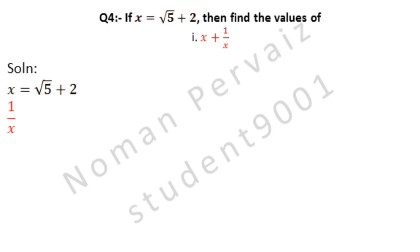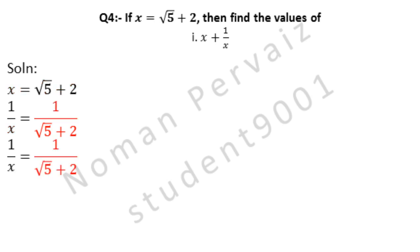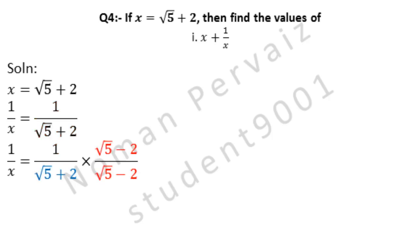1 over x is equal to 1 divided by the value of x. Next we will multiply and divide by the conjugate of the denominator. The denominator, indicated in blue color, is under root 5 plus 2, so its conjugate will be under root 5 minus 2. We have multiplied and divided by the conjugate, which is under root 5 minus 2.